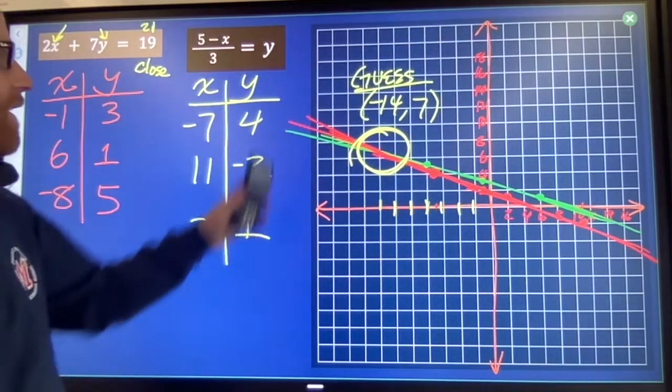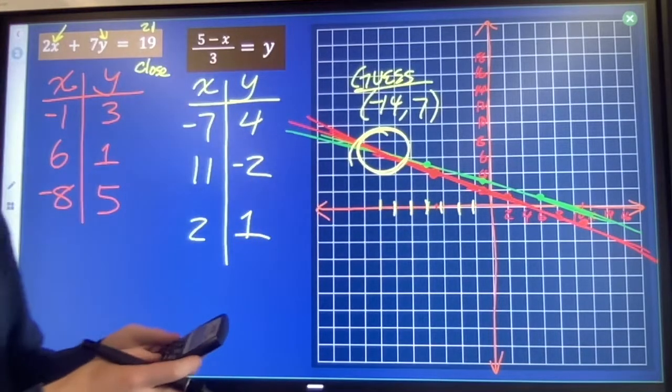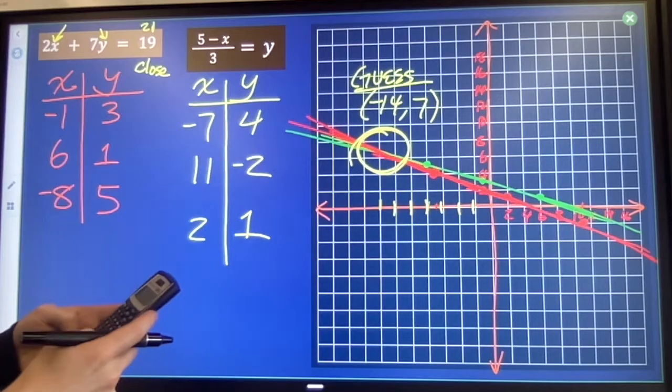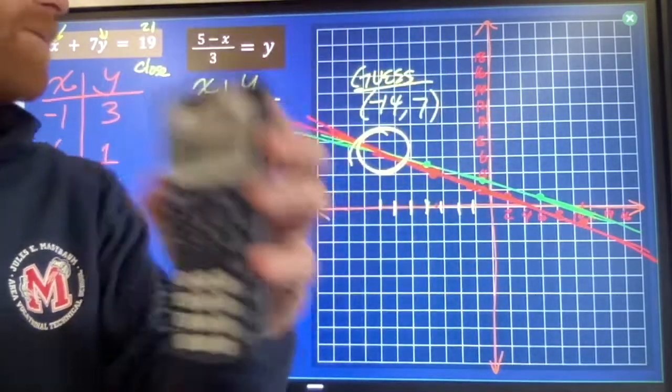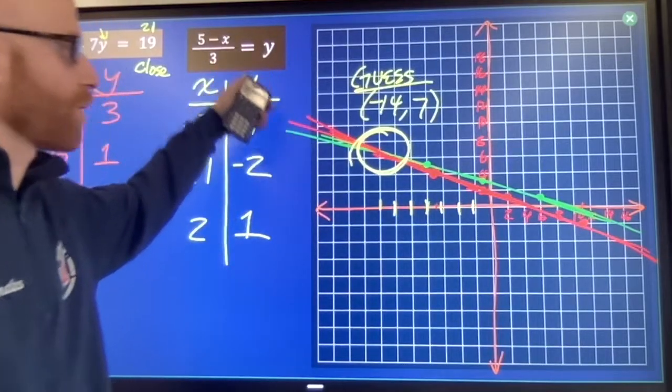If I do the same thing here, 5 minus negative 14 divided by 3, I get 6.333, which makes y close to 7.